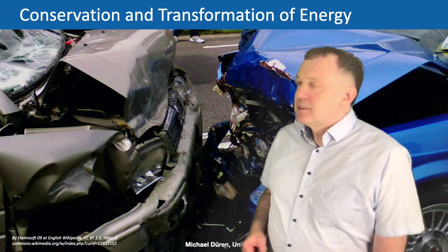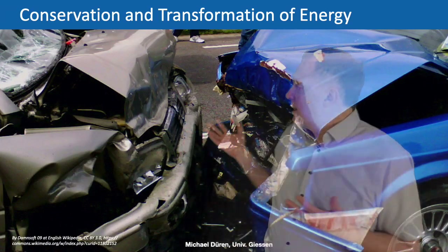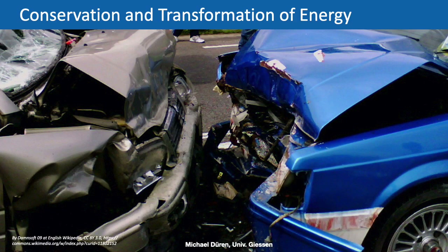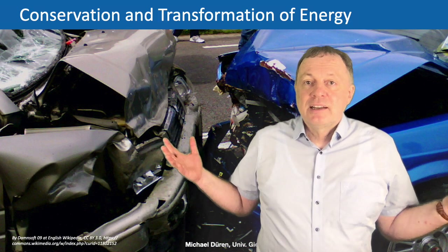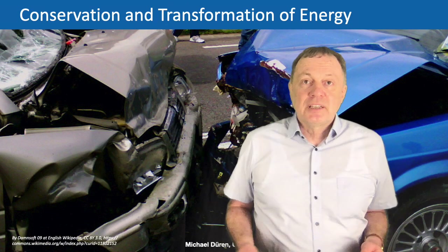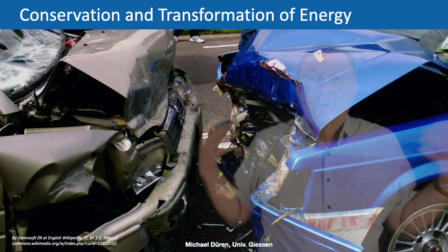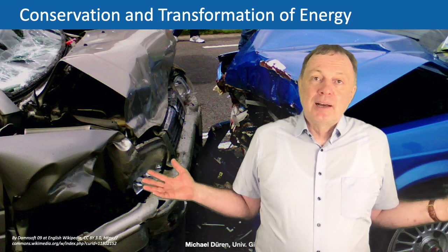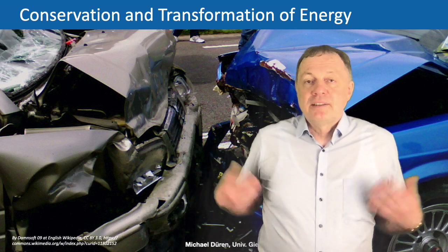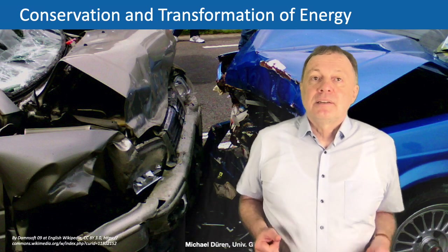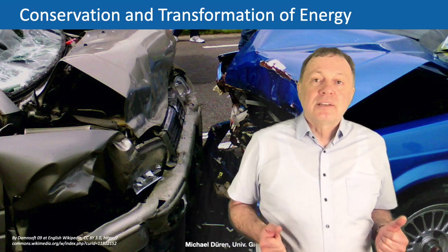Here you see a simple example: a crash of two cars. Probably these cars had high speed before - there was kinetic energy as we say as physicists - and then they crashed. There has been some deformation of the cars and afterwards the energy seems gone. So it looks like energy is used up and disappears, but in physics and in reality it's a bit different, and that's what I want to explain.